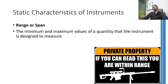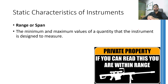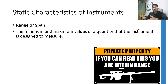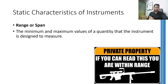After this, let's talk about a relatively simpler static characteristic: range or span. It defines the range of values an instrument can measure with stated accuracy and precision under stated environmental conditions. If you deviate from the environmental conditions, the range may vary. Or if you try to go beyond the range, you may not get the stated accuracy and precision, or you may even end up damaging the instrument.